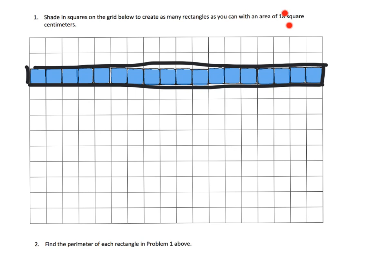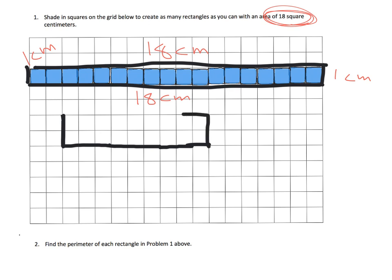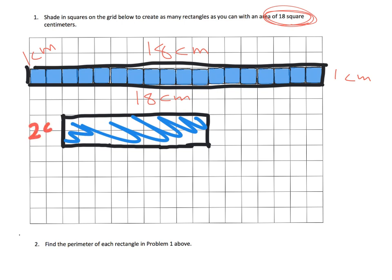Now, with those same 18 square units we're going to create another rectangle. This time let's make it 2 units tall. I'll scoot over a bit and line them up — two rows, and I know from my times tables that 2 times 9 is 18, so one, two, three, four, five, six, seven, eight, nine across. There is my rectangle using eighteen square units.